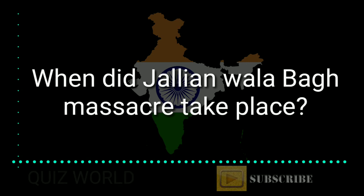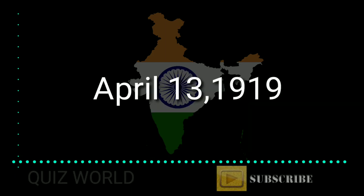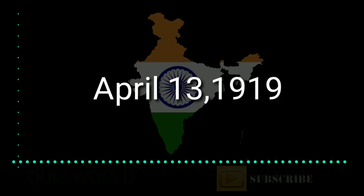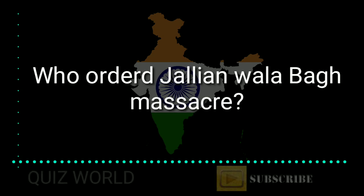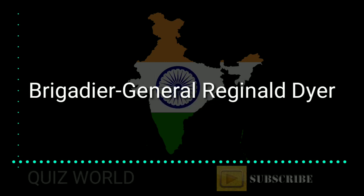When did the Jallianwala Bagh massacre take place? Answer is April 13th, 1919. Who ordered the Jallianwala Bagh massacre? Answer is General Reginald Dyer.